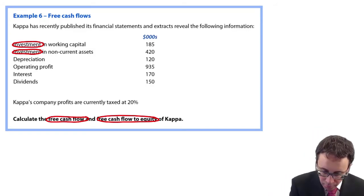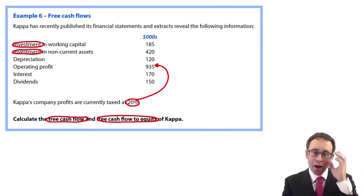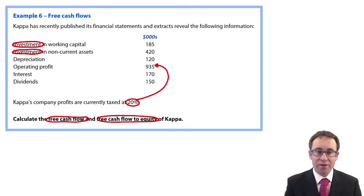However, just note the company's profit tax is there at 20%, so when we're looking at your tax payments, we will just take 20% of the operating profit, there at 935. So let's have a play around with it, see how we get on.